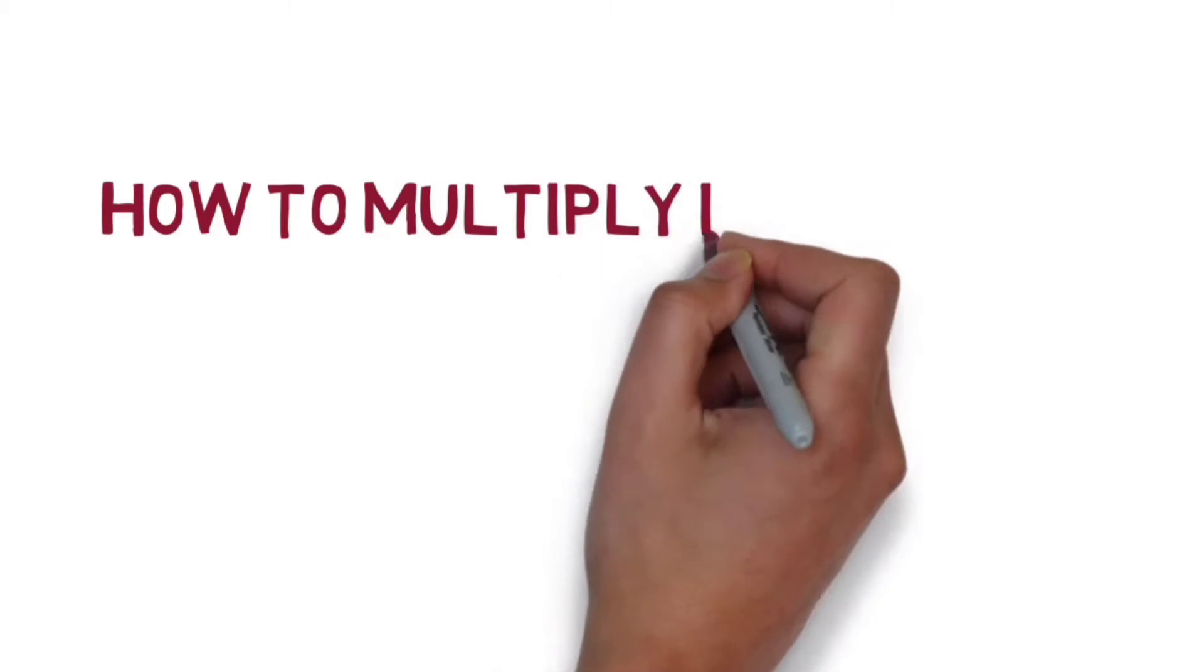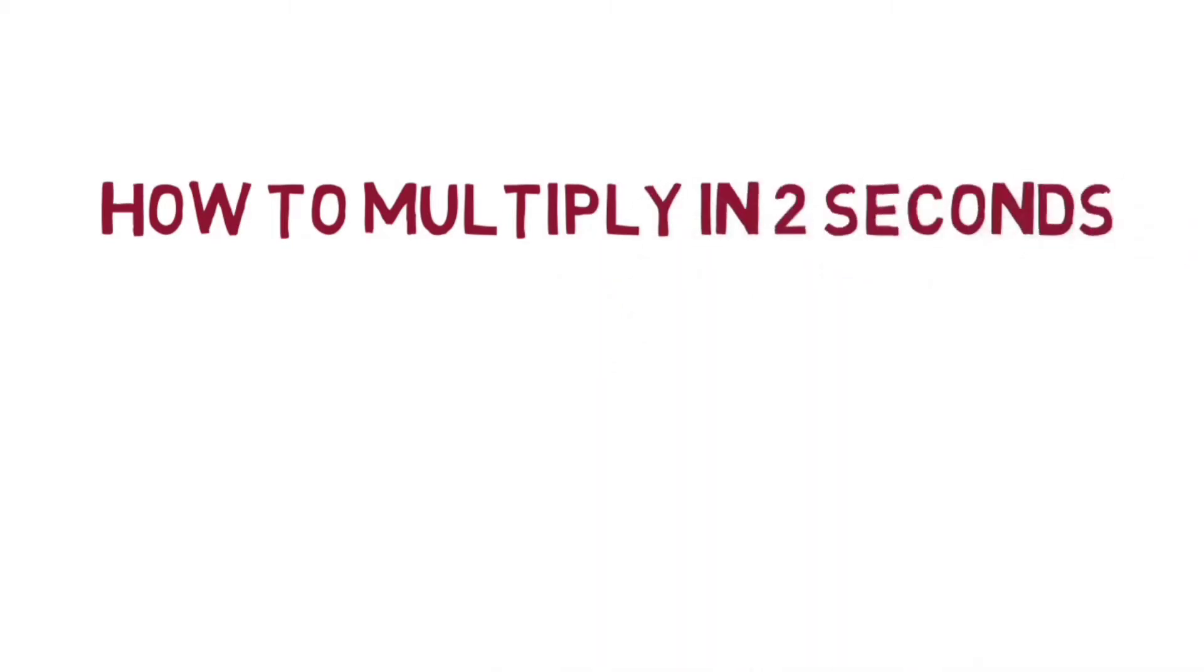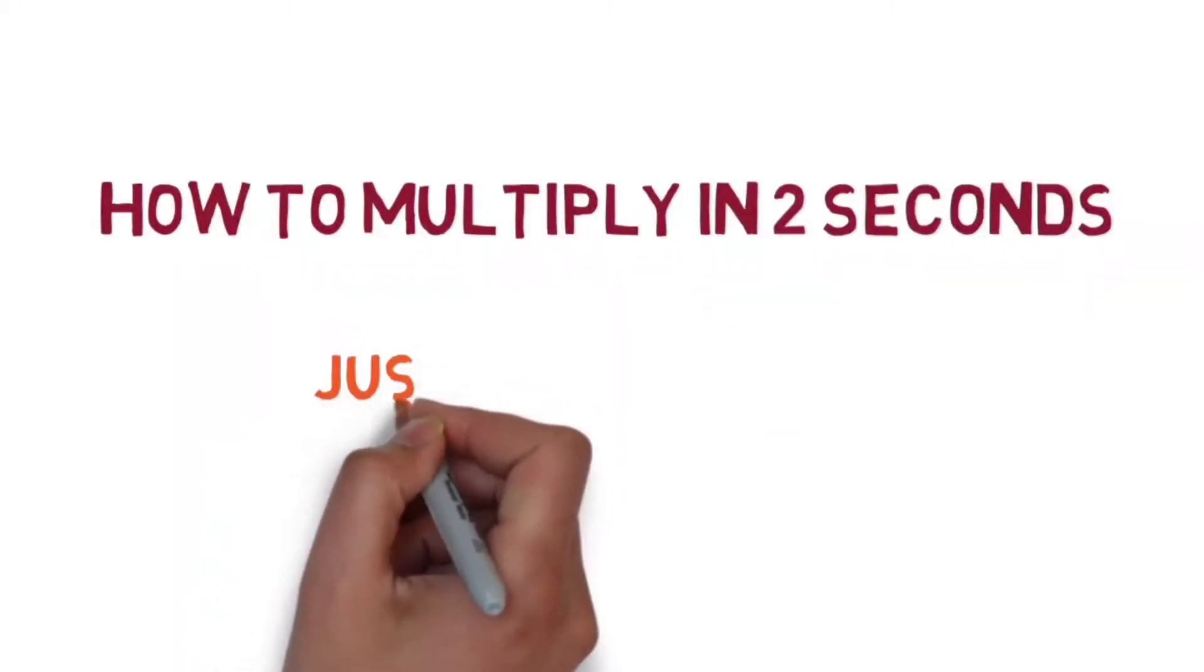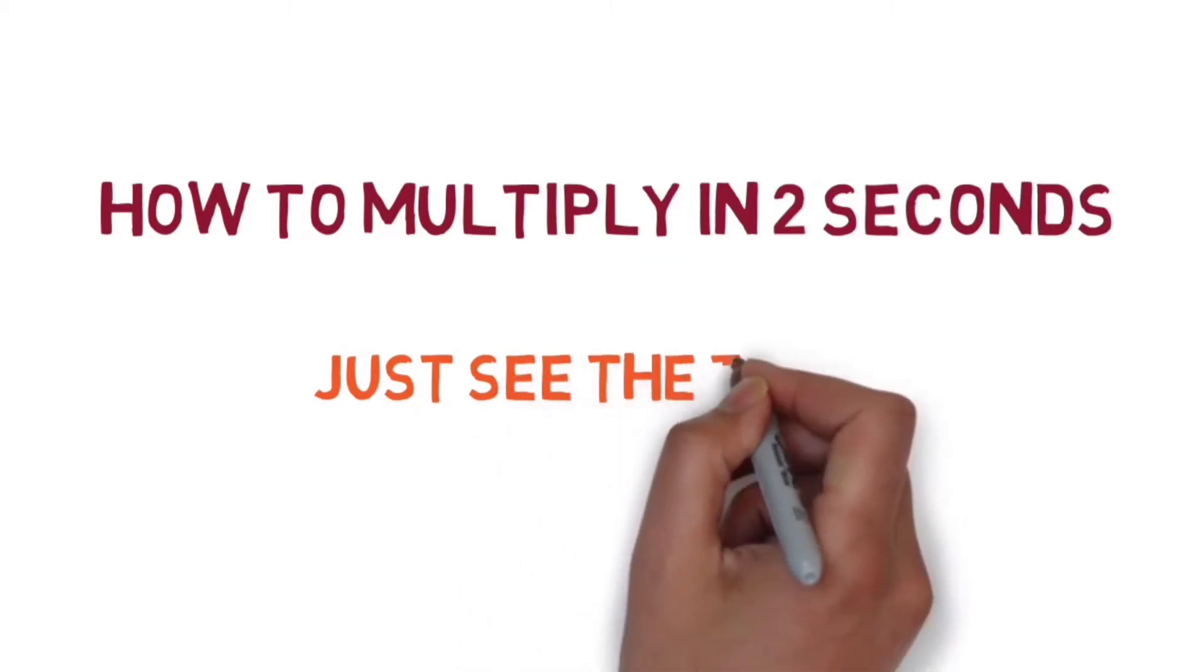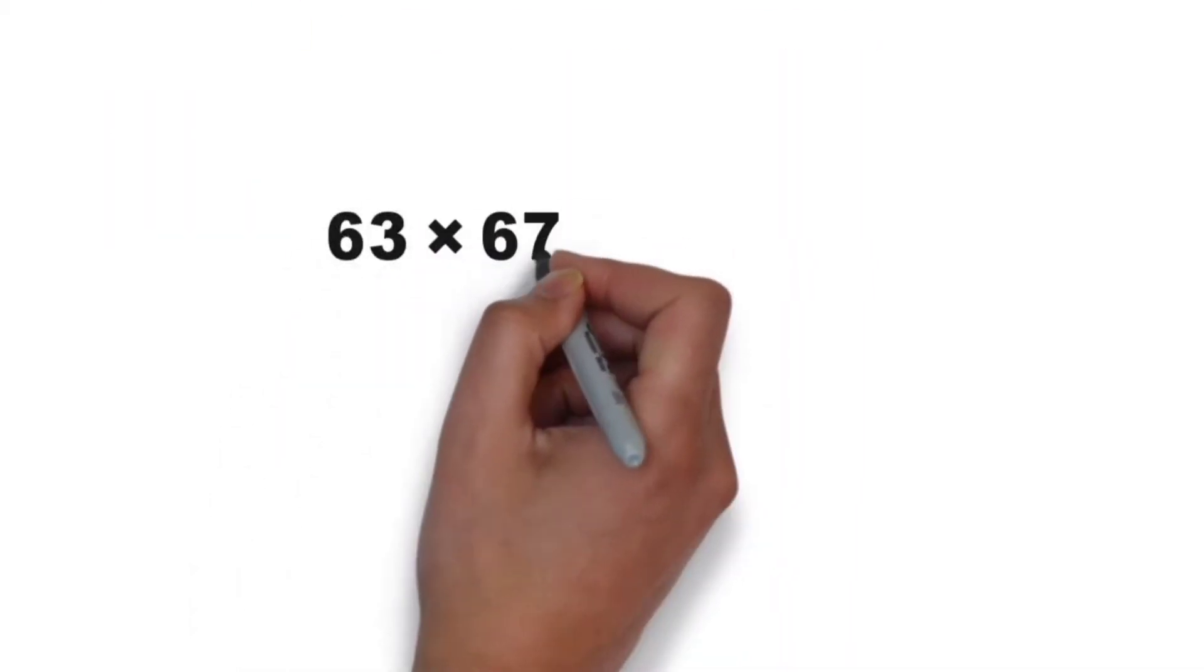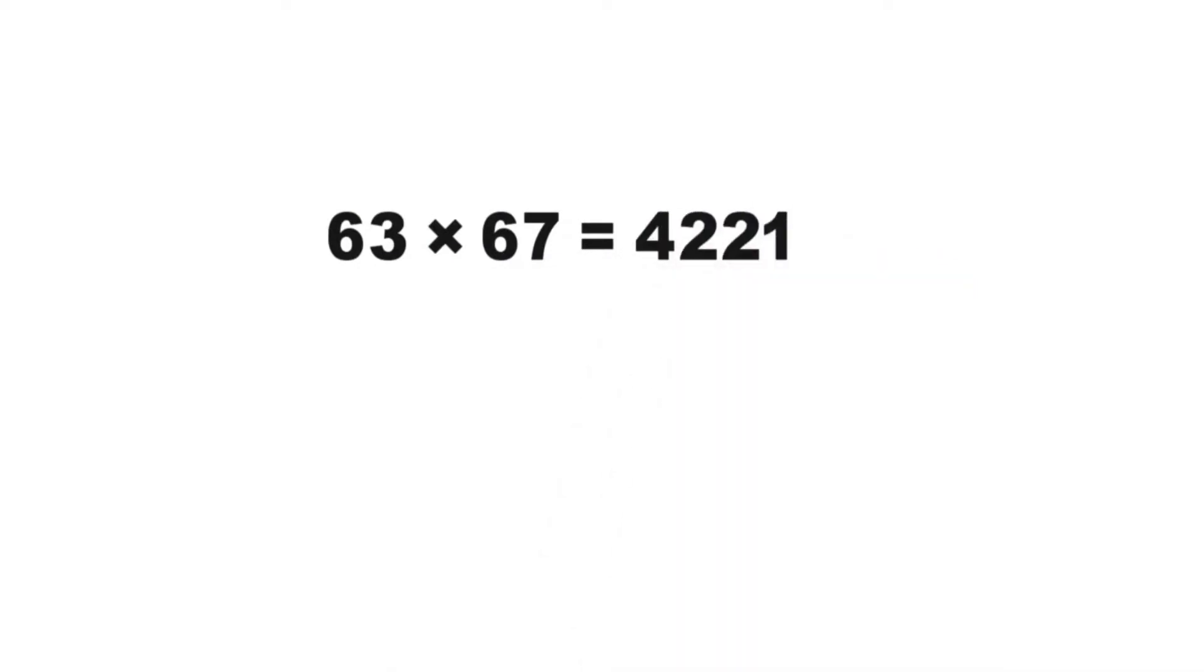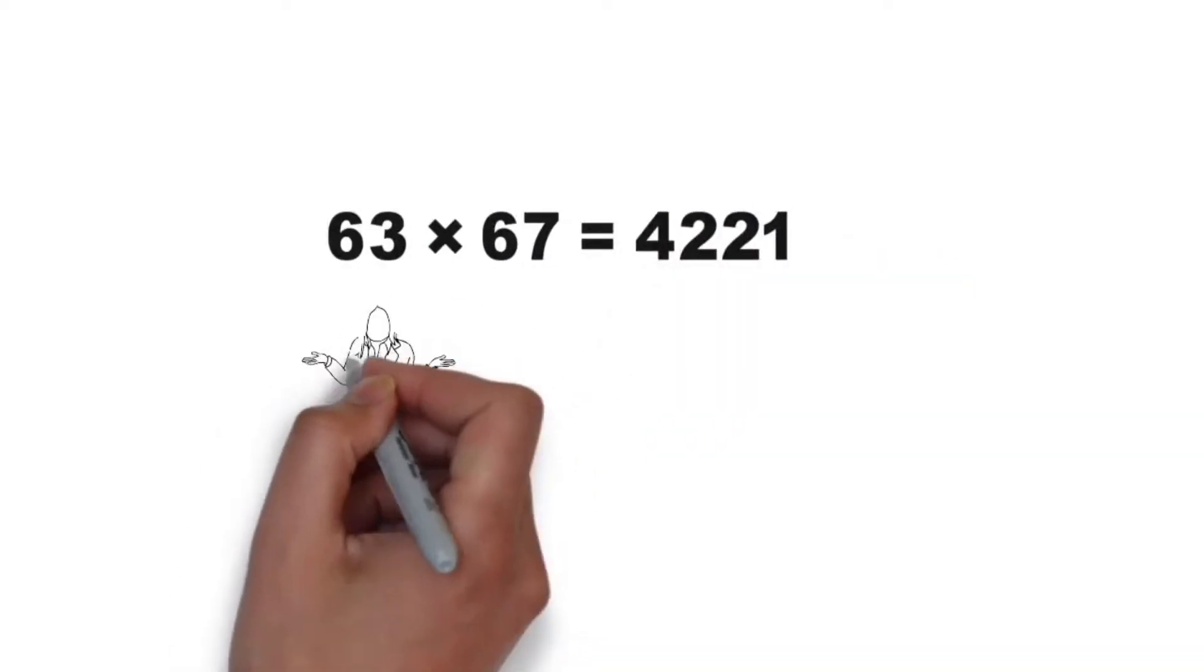How to multiply in two seconds? Just see the trick. 63 times 67 equal to 4221. But how is it possible in two seconds? Just see the trick.